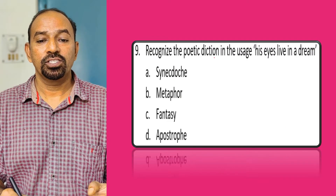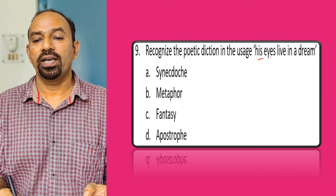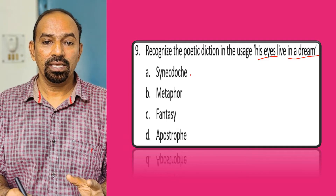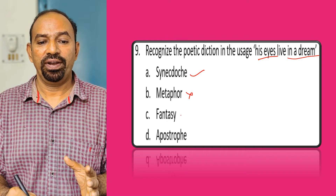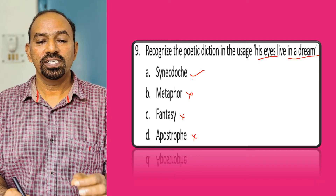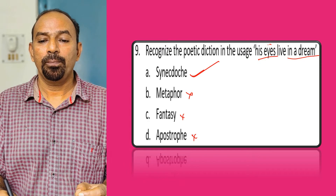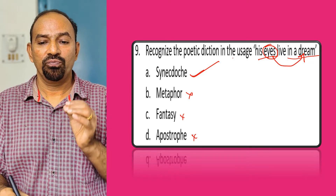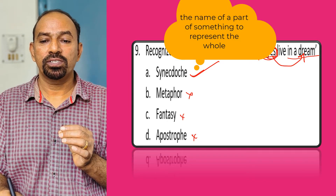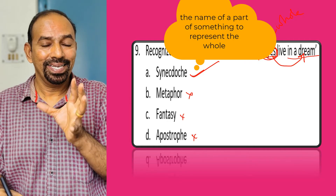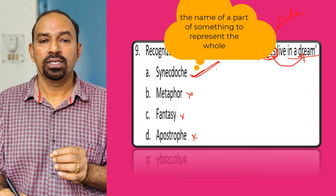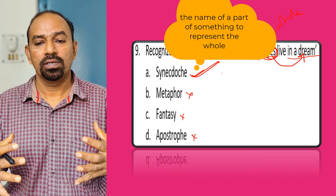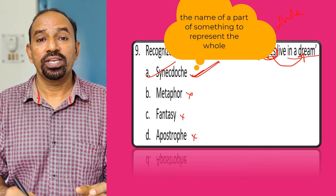Question nine: Recognize the poetic device in 'his eyes live in a dream'. The answer is synecdoche. Eyes cannot literally live in a dream. When a part of something represents the whole, it is called synecdoche. Here, 'eyes' stands for the person's whole sense and body. So the poetic device used here is synecdoche.